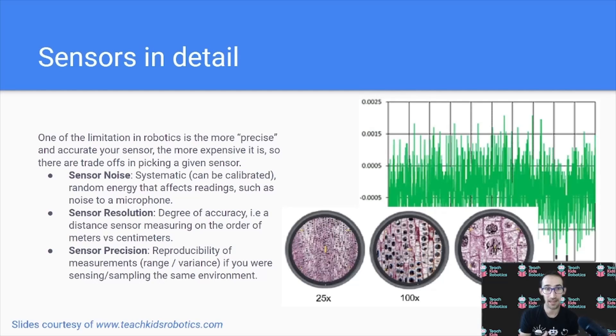Considering sensors in more detail, sensors have three main properties. They have noise, or the amount of random energy in the environment that the sensor will read that can affect the reading, such as when your microphone is on and you hear static. They have resolution, which is the degree of accuracy that a sensor can provide, such as distance on the order of meters or centimeters. We can think of that like a microscope giving different levels of resolution. Finally, we have precision, or the reproducibility of measurements. If you sample the same environment multiple times with the same sensor, the reading may change. We consider all three attributes because the cost of the sensor can change depending on how high quality, precise, and high resolution with reduced noise we would like the sensor to have.